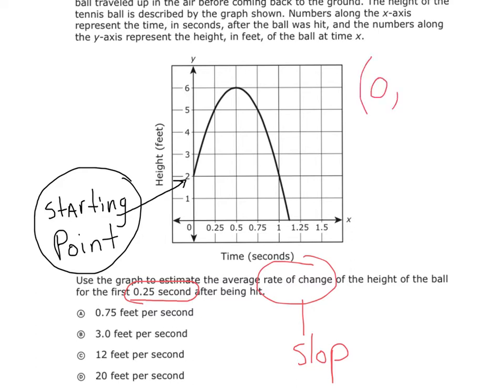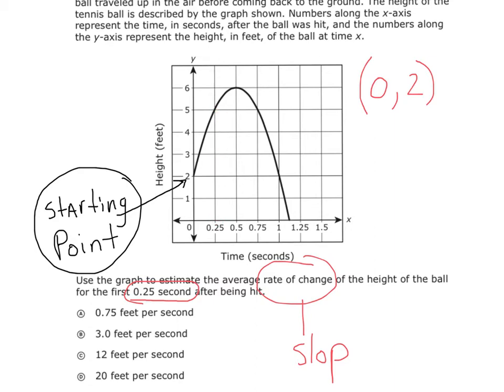The point 0 is how high? 2. So you've got the point 0 and up 2. And then you've got 0.25 and what? So those are our two points. 0, 2, and then 0.25 and 5. And so if you find the slope between those two points, you will have told the average rate of change.